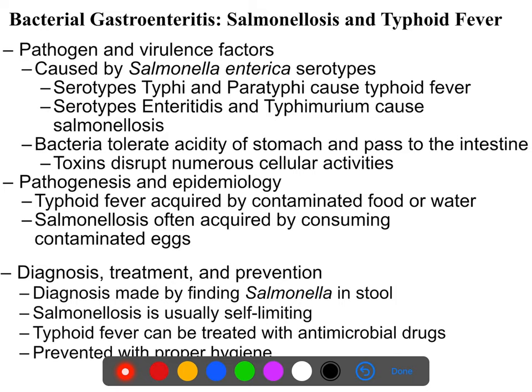Salmonellosis and typhoid fever are both caused by various subtypes of Salmonella enterica. Salmonella typhi and paratyphi cause typhoid fever, whereas Salmonella enteritidis and typhimurium cause salmonellosis. All four of these bacteria can briefly tolerate the acidity of the stomach — not enough to colonize it, but enough to survive through to the intestines.